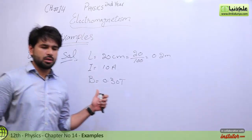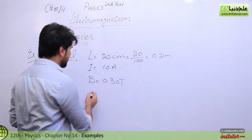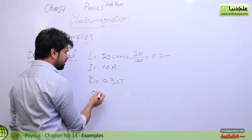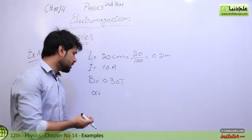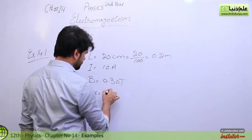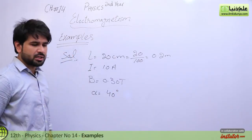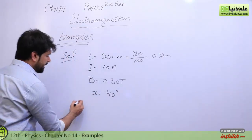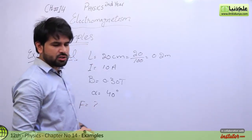Magnetic field B is 0.30 tesla. Another piece of information is the angle — we have alpha. The angle with respect to the magnetic field is given as 40 degrees.